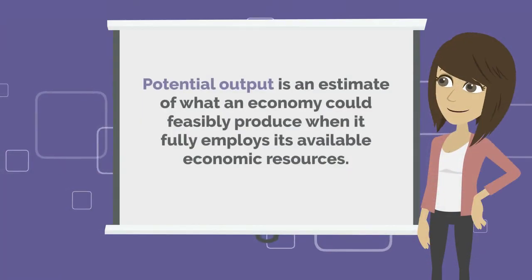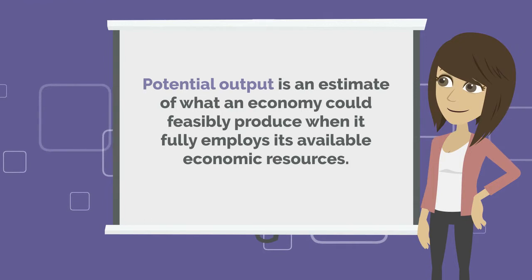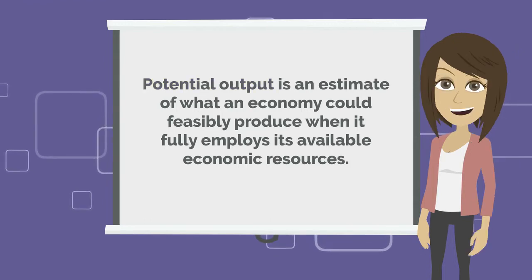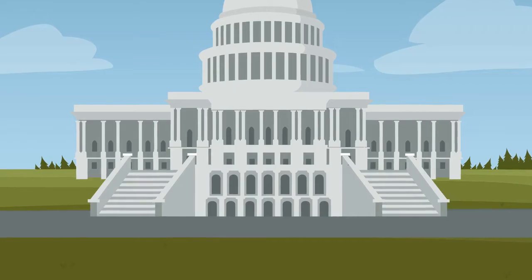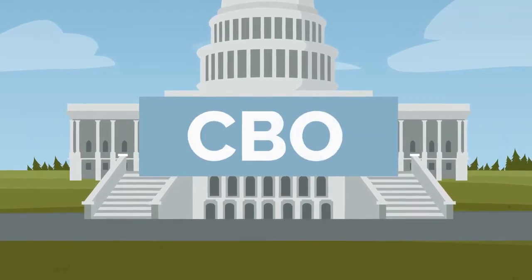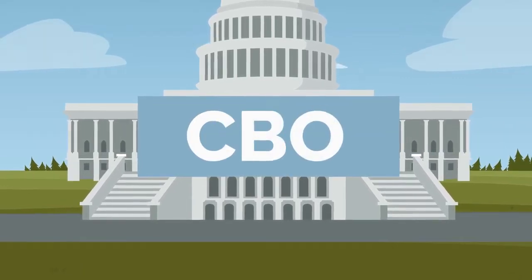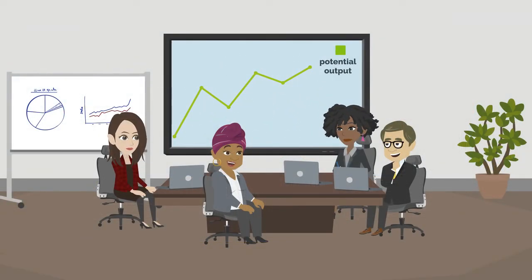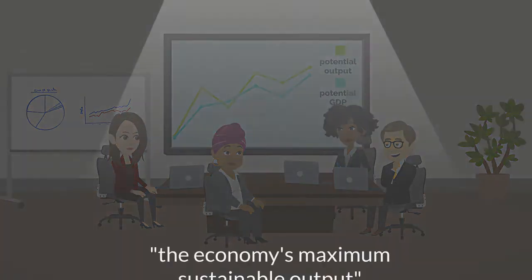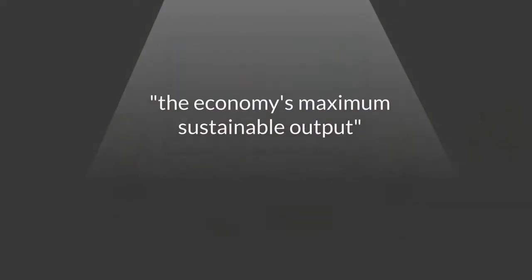Potential output is an estimate of what an economy could feasibly produce when it fully employs its available economic resources. The Congressional Budget Office, abbreviated as CBO, estimates potential output by estimating potential GDP, which it describes as the economy's maximum sustainable output.